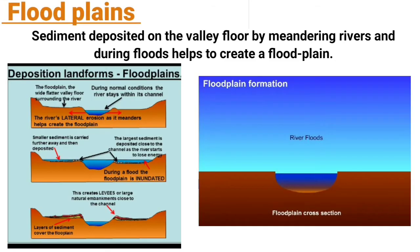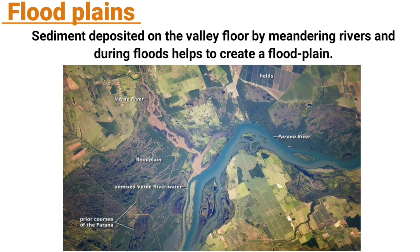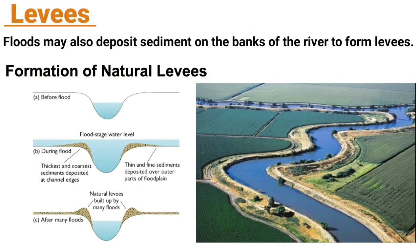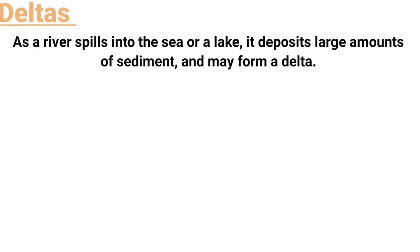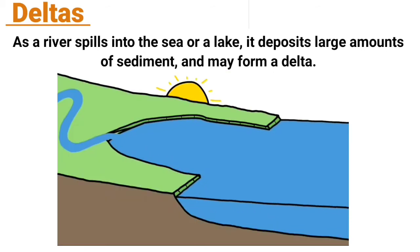Sediment deposited on the valley floor by meandering rivers and during floods helps to create a floodplain. Floods may also deposit sediment on the banks of the river to form levees, as a river spills into the sea or a lake.